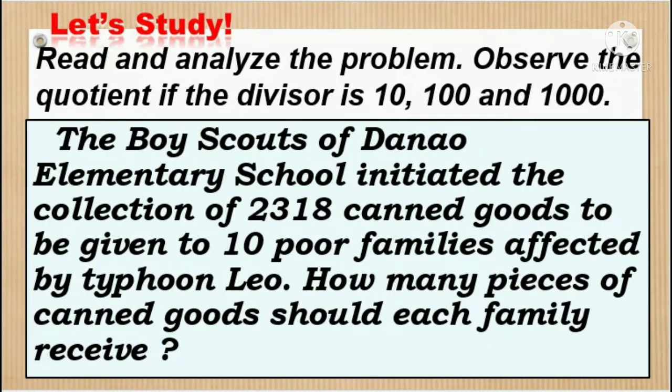The Boy Scouts of the Nao Elementary School initiated the collection of 2,318 canned goods to be given to ten poor families affected by Taipun Leo. How many pieces of canned goods should each family receive?